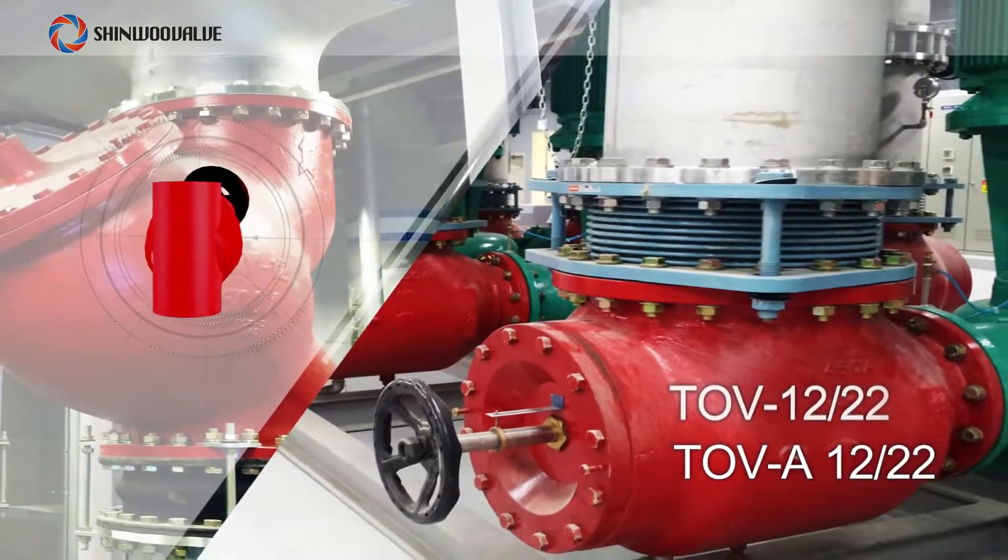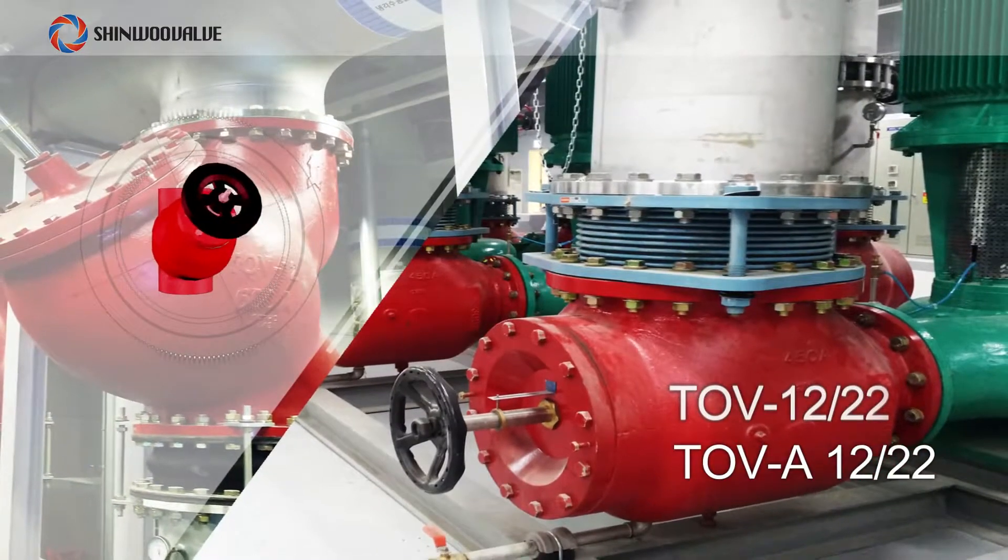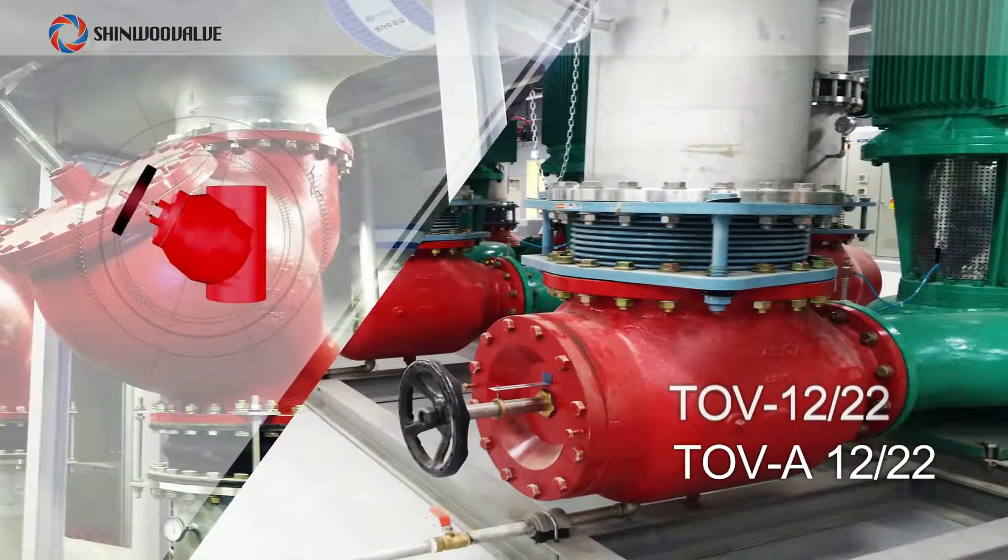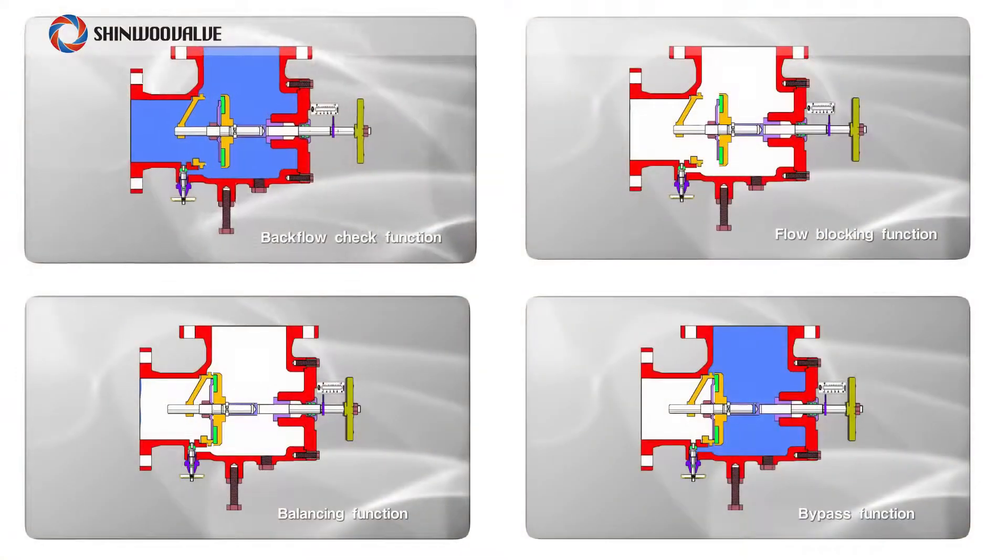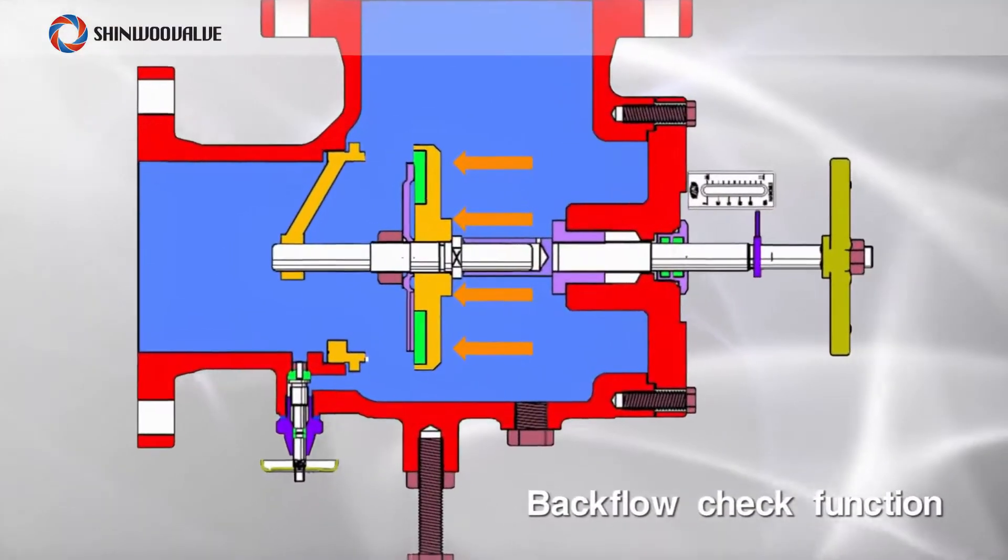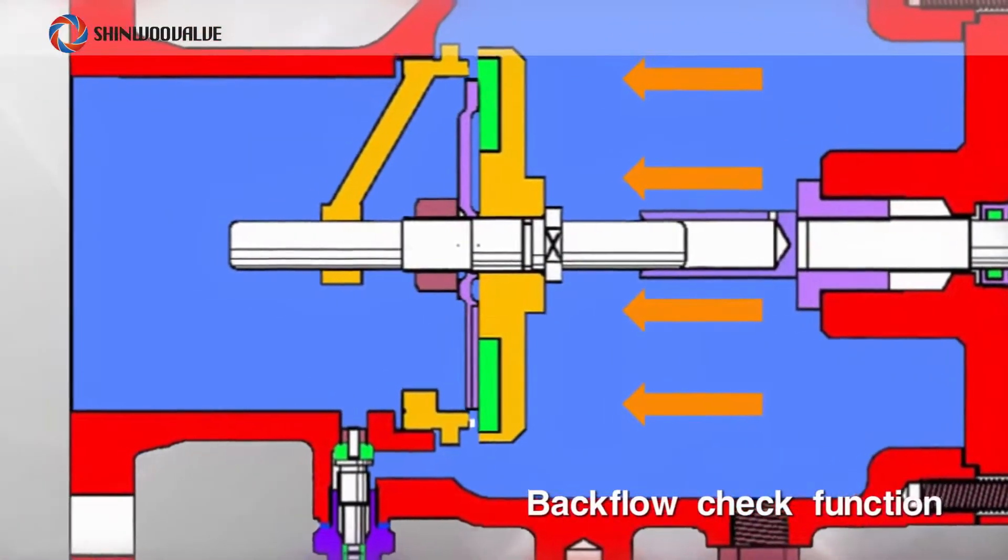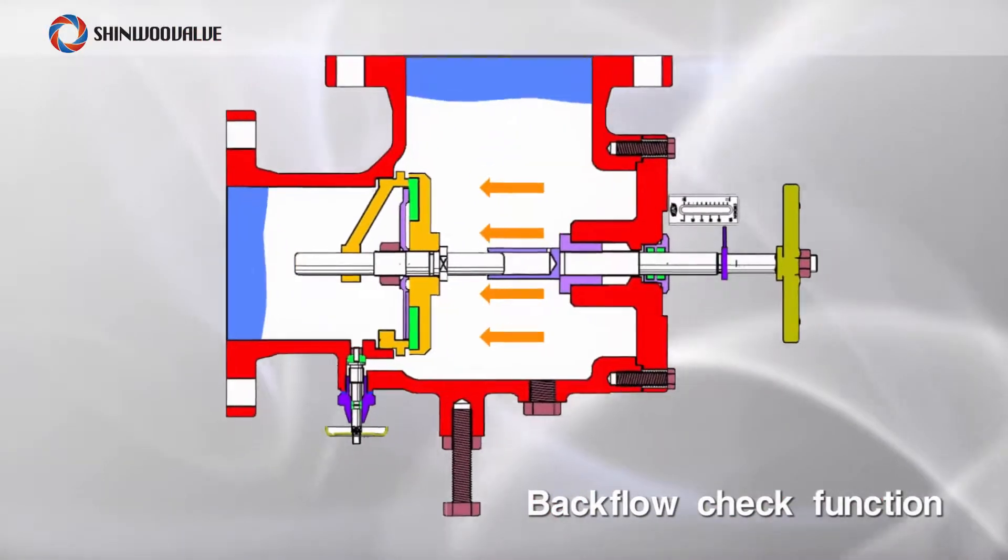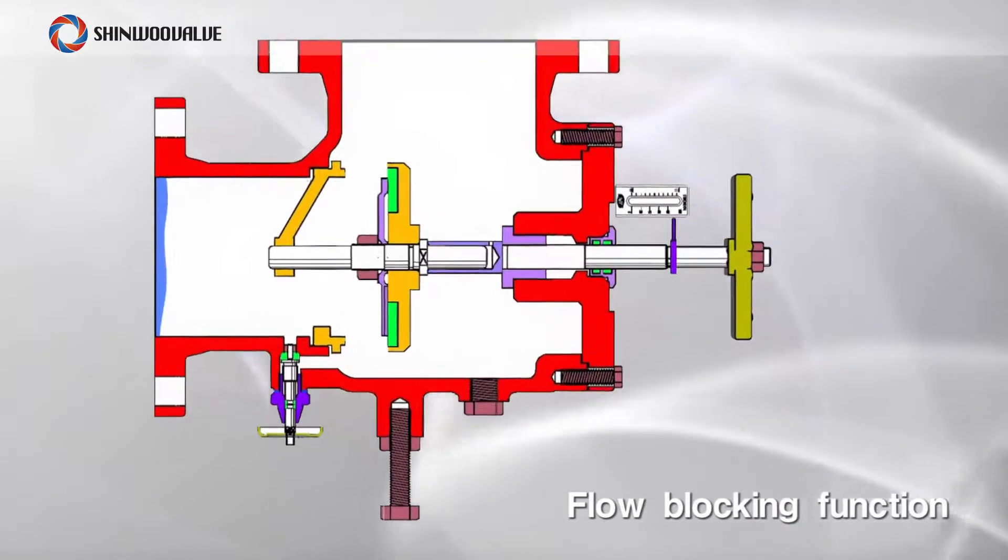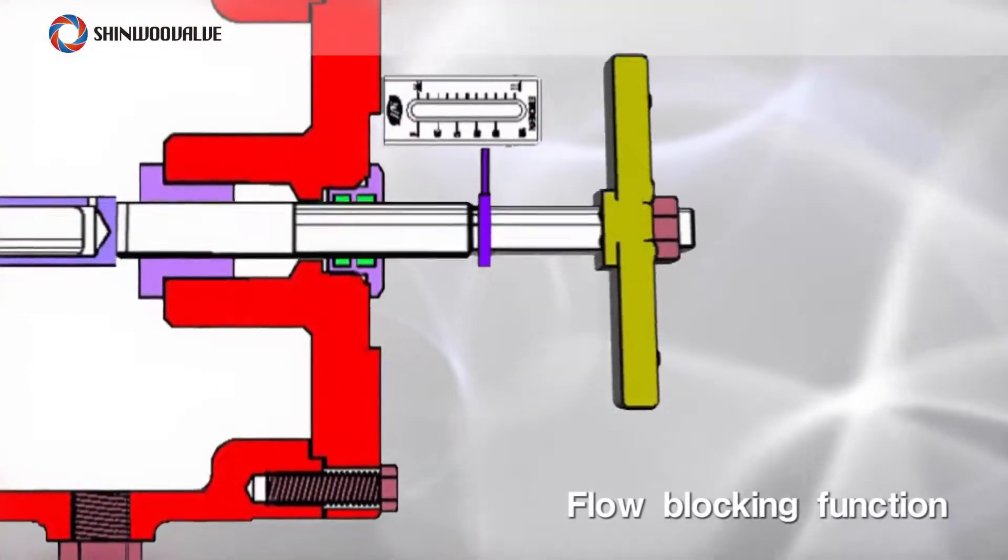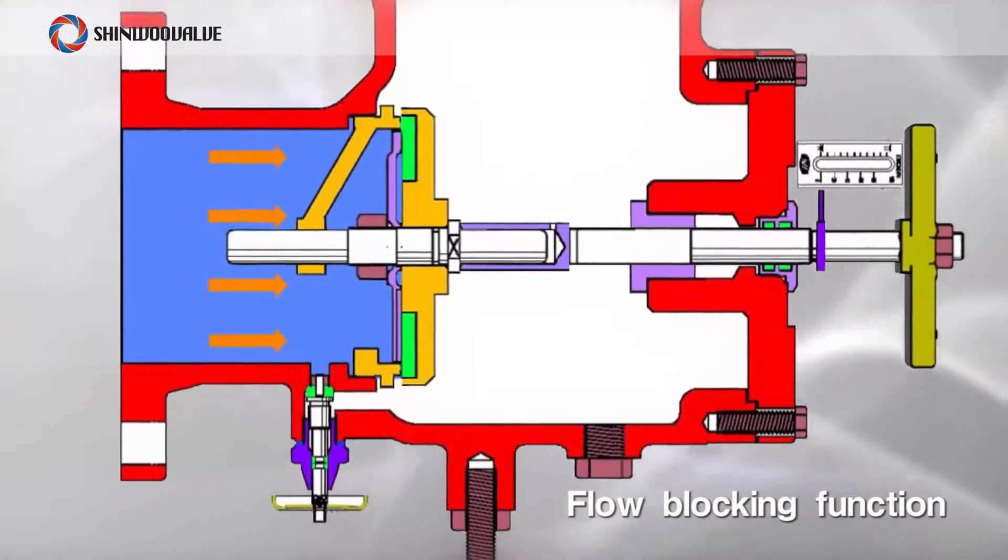A triple-duty check valve designed by Shinoo Valve is installed at the outlet of the pump and prevents fluid from flowing backward when the pump stops its operation. Its backflow check function prevents the pump from water hammering when it abruptly stops and with its flow blocking function it is possible to block fluid flow inside the pipe by closing the valve with the handle.